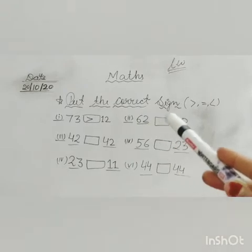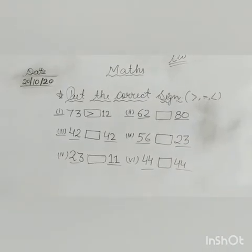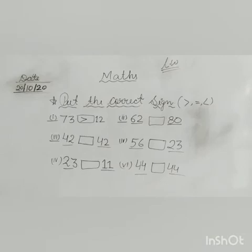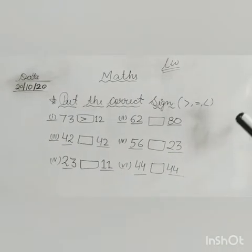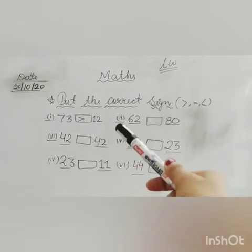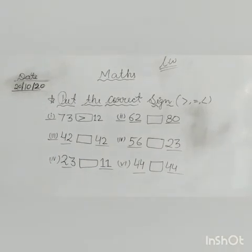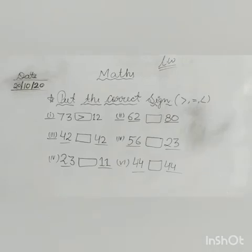Next, 62 and 80. Which number is greater here? It is very easy kids, yes, 80. So we have to put the sign of lesser. Why? Because 62 is lesser than 80. Okay, so put the sign of lesser and open the mouth of sign towards 80.